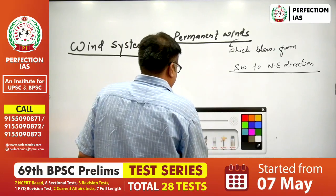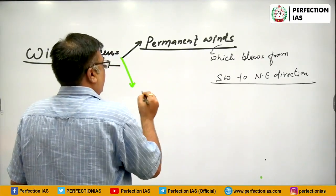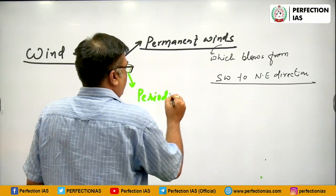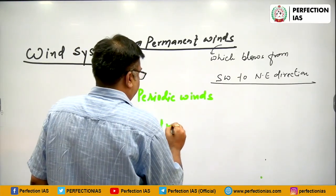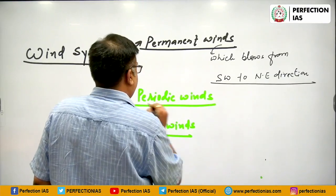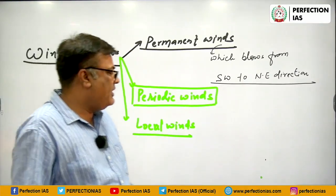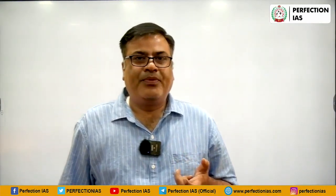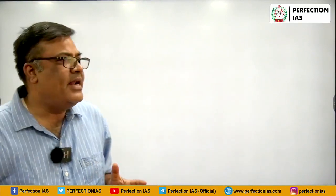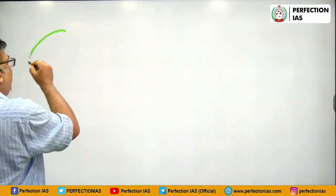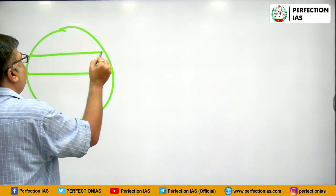So, permanent winds. And thereafter we had talked about periodic winds. But I have simply mentioned it, and the third one is local wind. Today we are going to talk about the periodic wind system. Now, here you see which wind system is called a periodic wind system. While talking about the features and properties of permanent wind, we learnt that permanent winds are those which keep blowing in the same direction throughout the year.